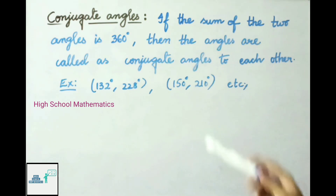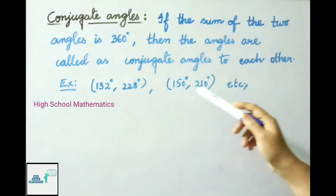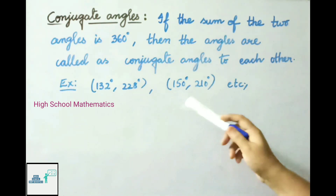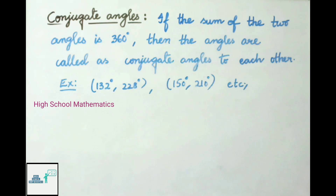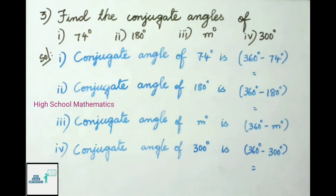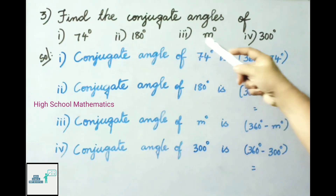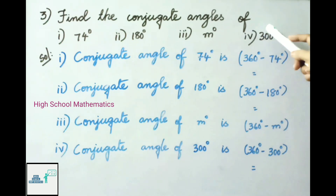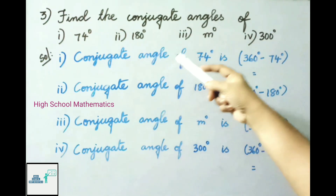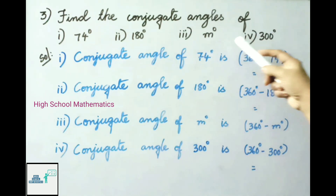See another example: 150 degrees and 210 degrees — the sum of these two angles is also 360 degrees, therefore these two angles are also called conjugate angles. See now question number 3: find the conjugate angles of 74 degrees, 180 degrees, m degrees, and 300 degrees.